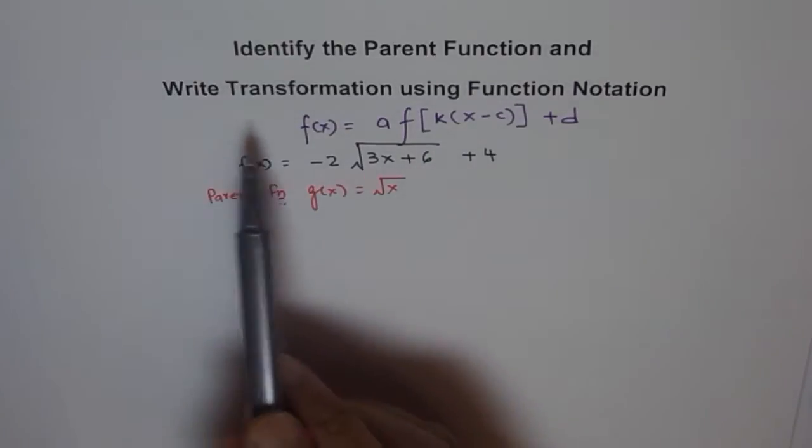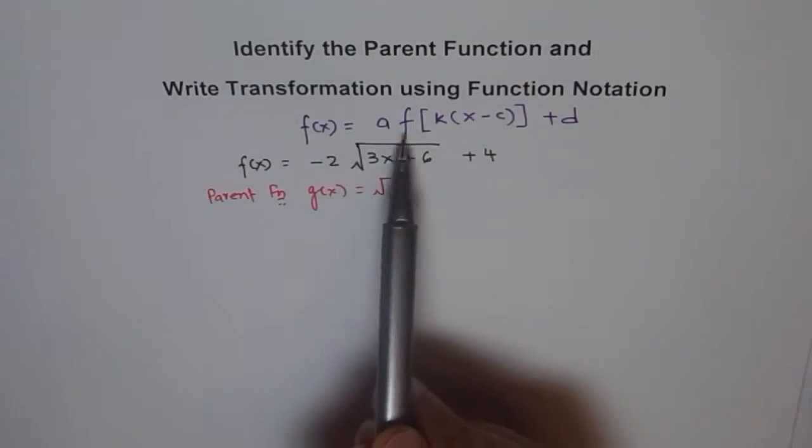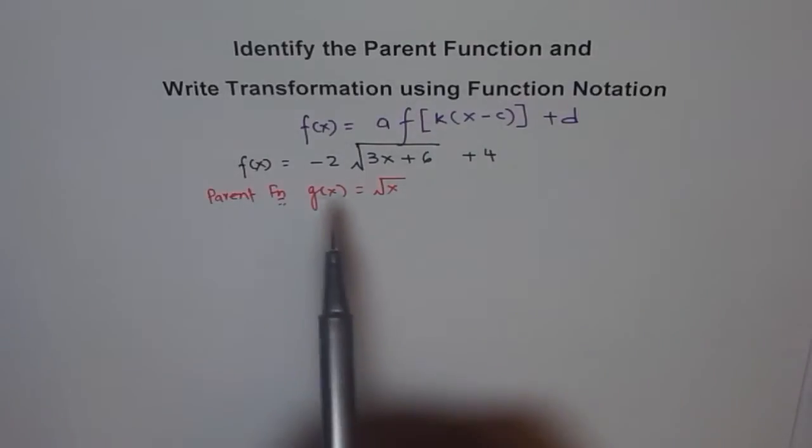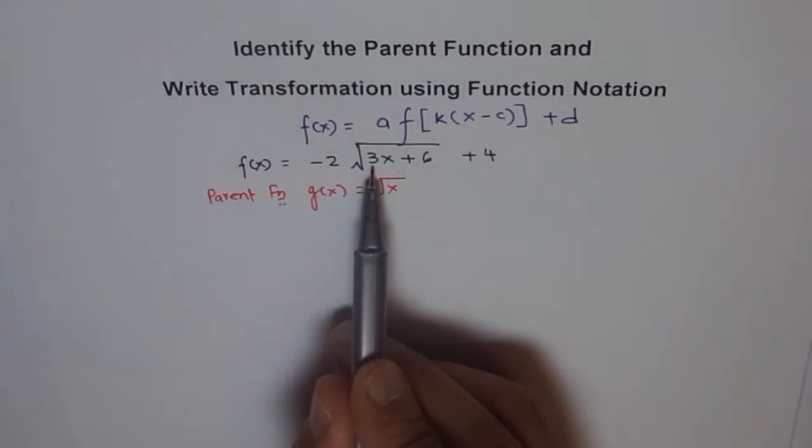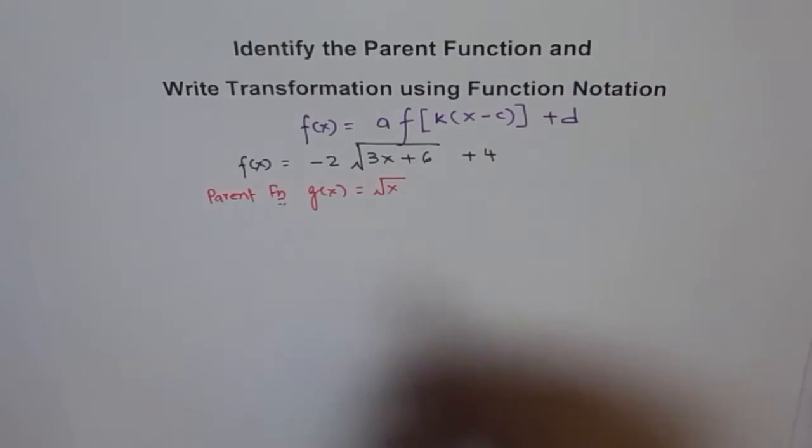And now the second part is write the transformation using function notation. So we have to write transformation in this form - that is what the question really is. So to do so, what we should do is, here it is a good practice to factor out 3.